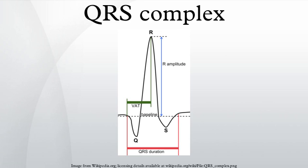For example, an RS complex would be positively deflected, while an rS complex would be negatively deflected. If both complexes were labeled RS, it would be impossible to appreciate this distinction without viewing the actual ECG.